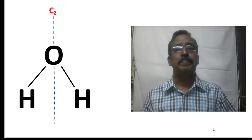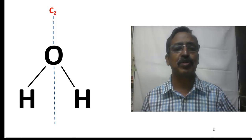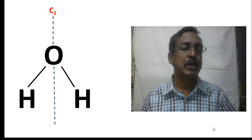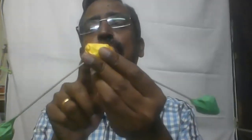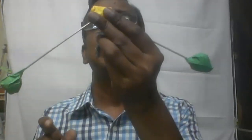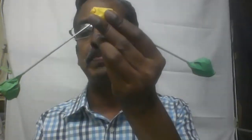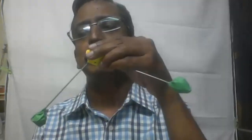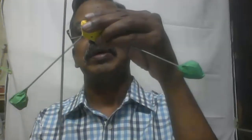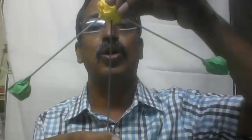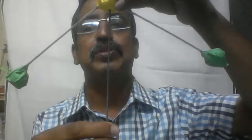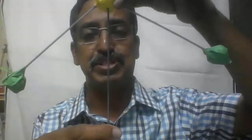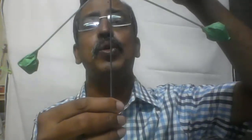Next we come to the axis C2. C2 is the only axis in the water molecule and so it is the principal axis. The C2 axis in the water molecule appears like this — the yellow ball here represents oxygen and the two green balls represent the hydrogen atoms. This rod is an imaginary C2 axis. The imaginary C2 axis passes through the oxygen atom, bifurcates the two O-H bonds, and it is in the molecular plane — the plane which contains the oxygen atom and the two hydrogen atoms.